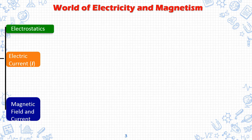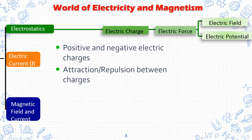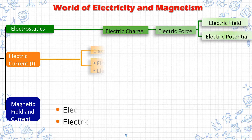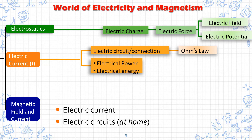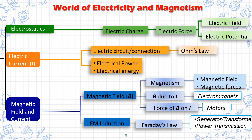We are going to focus on these three terms: electrostatics, electric current, and magnetic field and current. When we talk about electrostatics, it refers to electric charge, which is produced by electric force, and also through electric field and electric potential — referring to the positive and negative electric charges and the attraction and repulsion between charges. For electric current, which you covered in grade 8, this pertains to the electric circuit, electric power and electrical energy, and is governed by Ohm's law. For magnetic field and current, it is divided into magnetic field and electromagnetic induction.